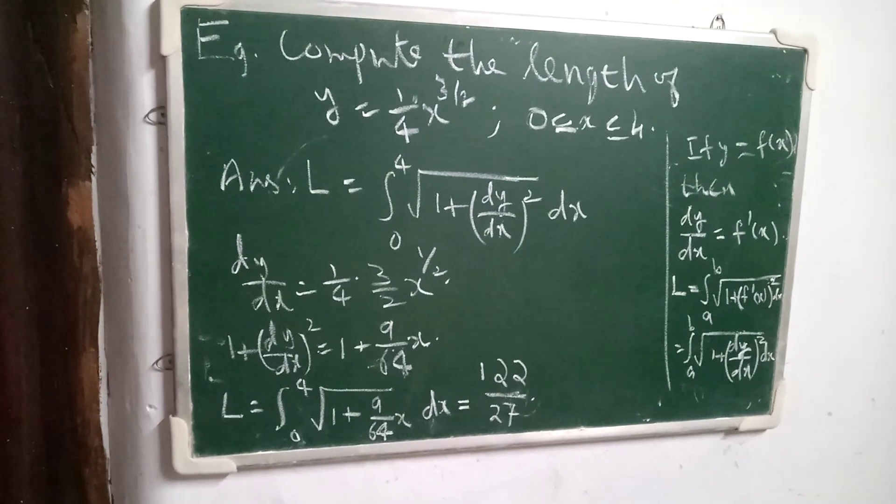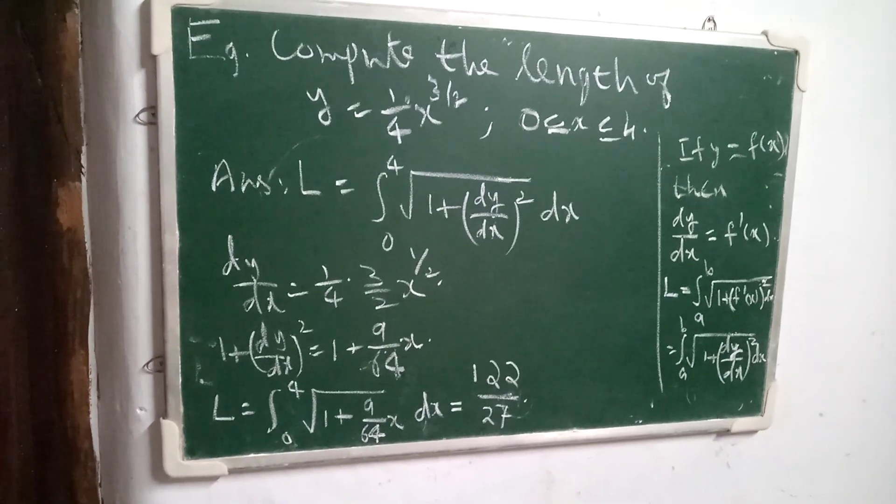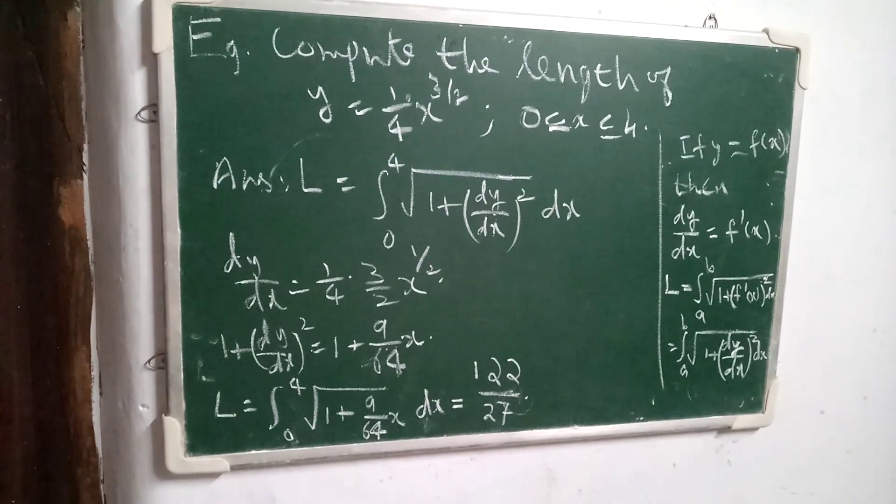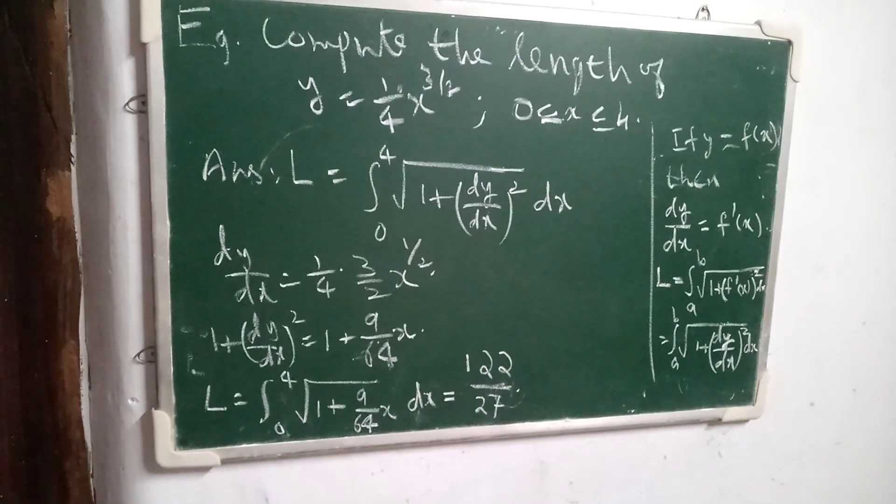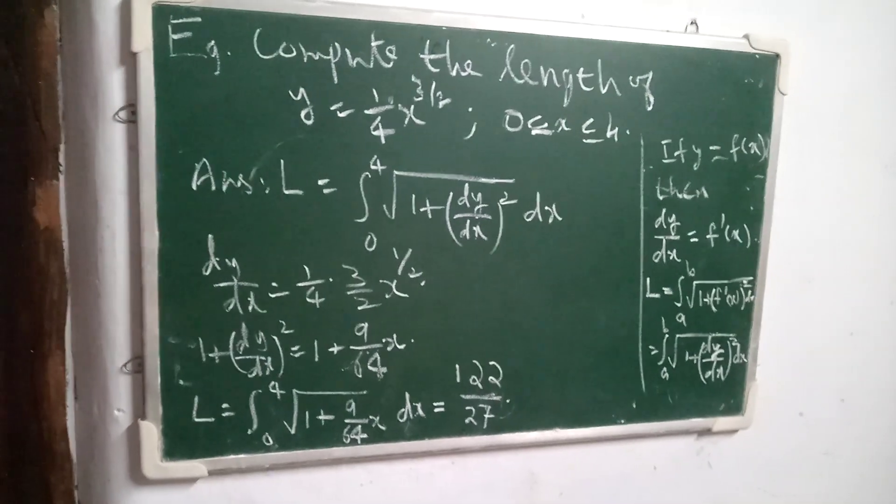Next is an example. Compute the length of the curve y equals 1 by 4 x to the power 3 by 2, where x varies from 0 to 4.